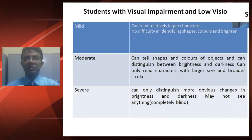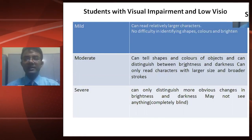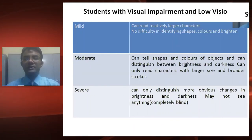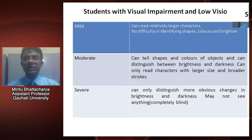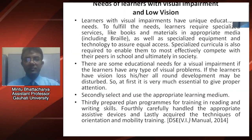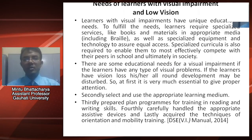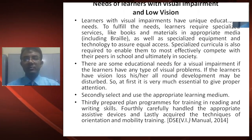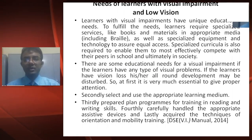Under severe classification, students with visual impairment and low vision can only distinguish more obvious changes related to brightness and darkness. They may not see anything, or can be considered completely blind.